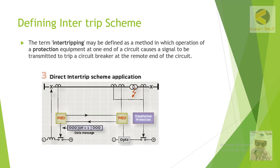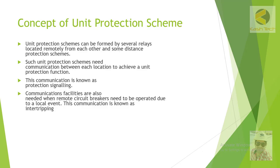This is basically an example of transfer tripping, which can occur in the case of a radial feeder among other applications. Unit protection schemes can be formed by several relays located remotely from each other. Some distance protection schemes need communication between each location to achieve a unit protection function — this communication is known as protection signaling.